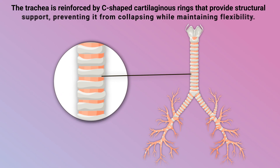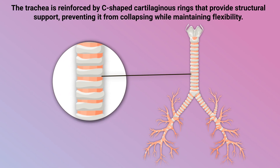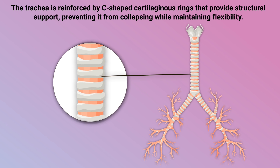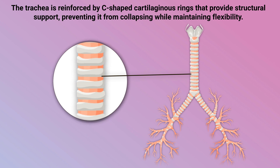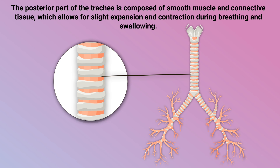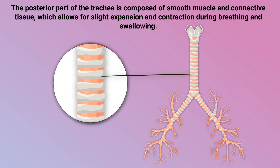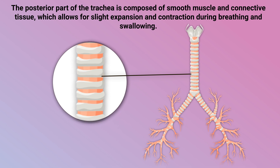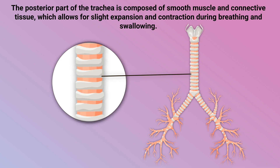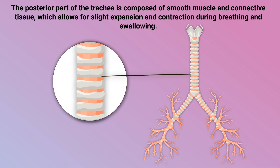The trachea is reinforced by C-shaped cartilaginous rings that provide structural support, preventing it from collapsing while maintaining flexibility. The posterior part of the trachea is composed of smooth muscle and connective tissue, which allows for slight expansion and contraction during breathing and swallowing.